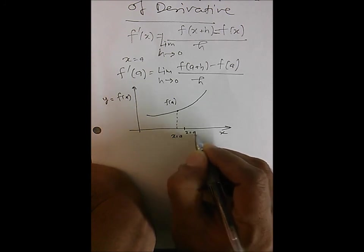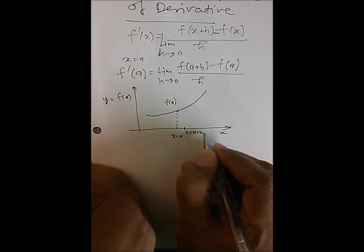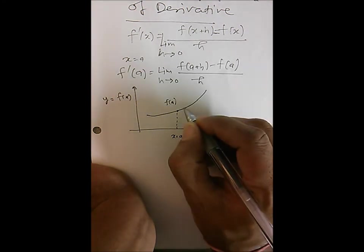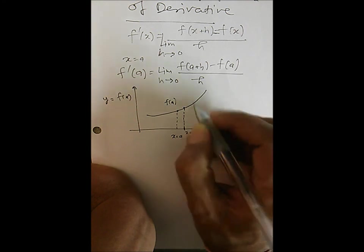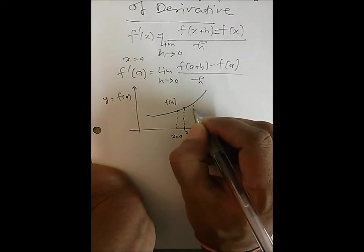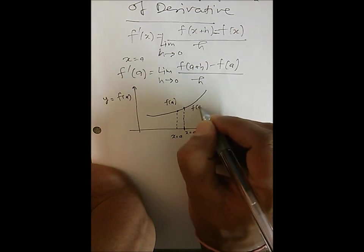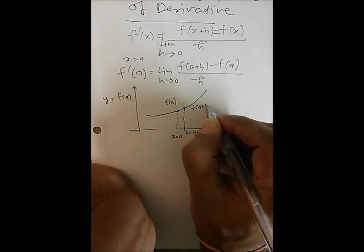We then find what the value of this function is at x equal to a plus h, and we denote it as f(a+h).